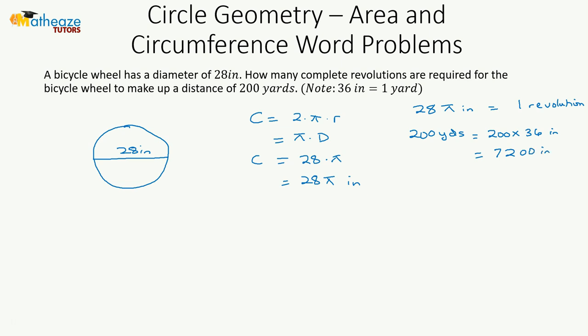Now we want to find out how many revolutions there are in 7,200 inches. Let's write our statement again: 28 pi inches will give us one revolution.